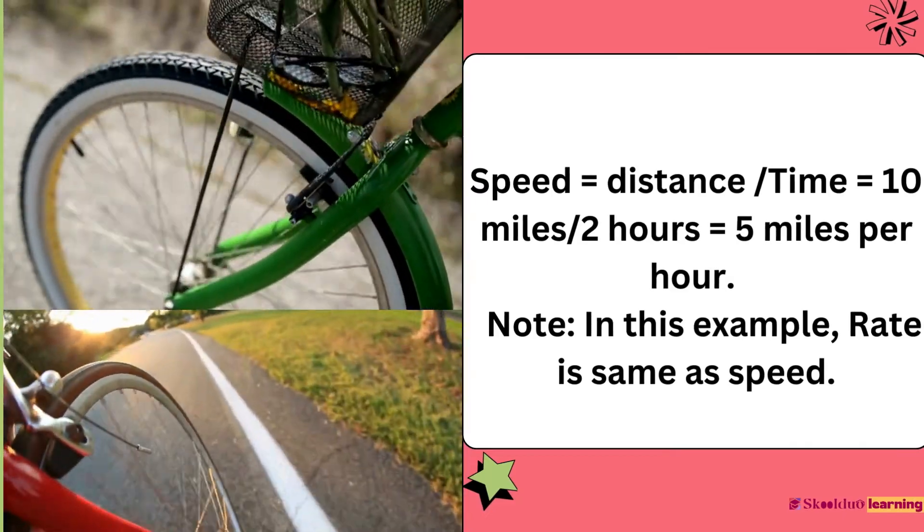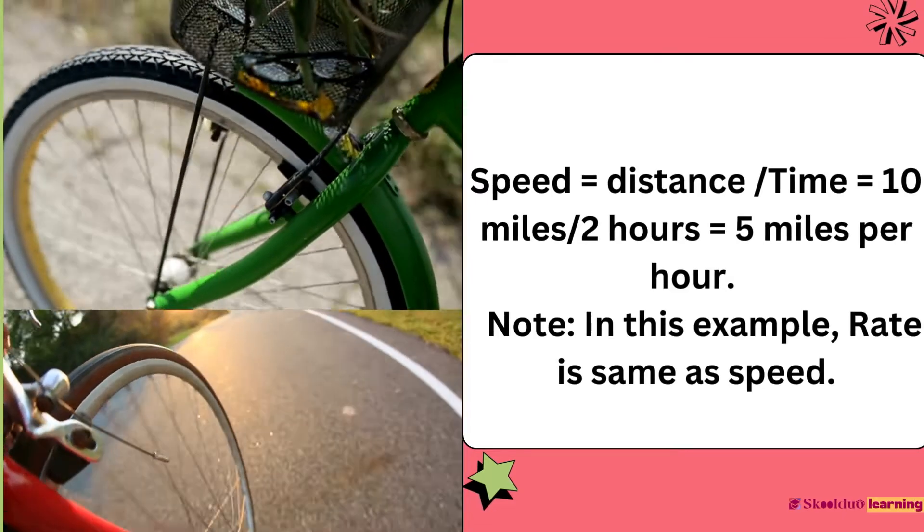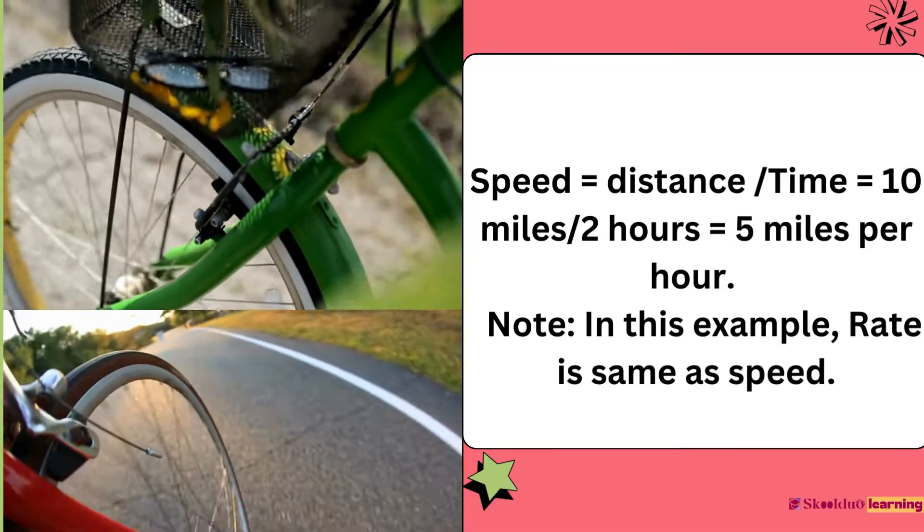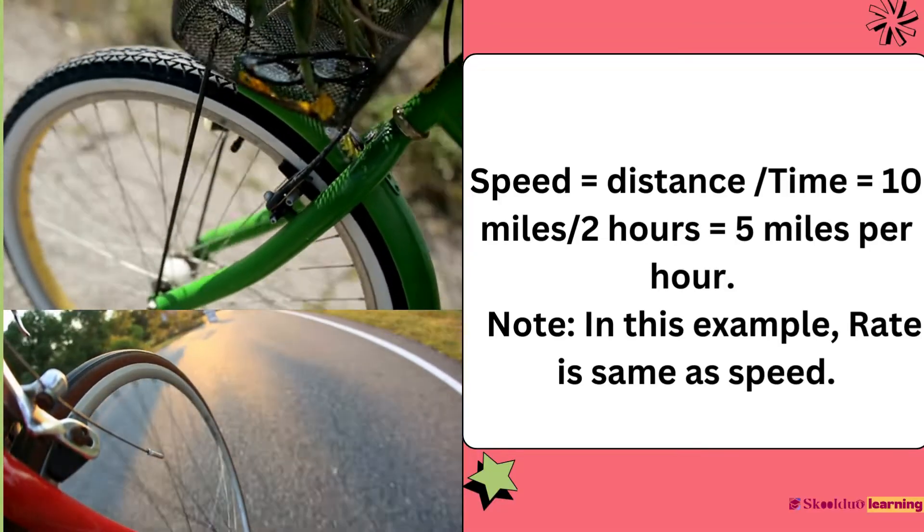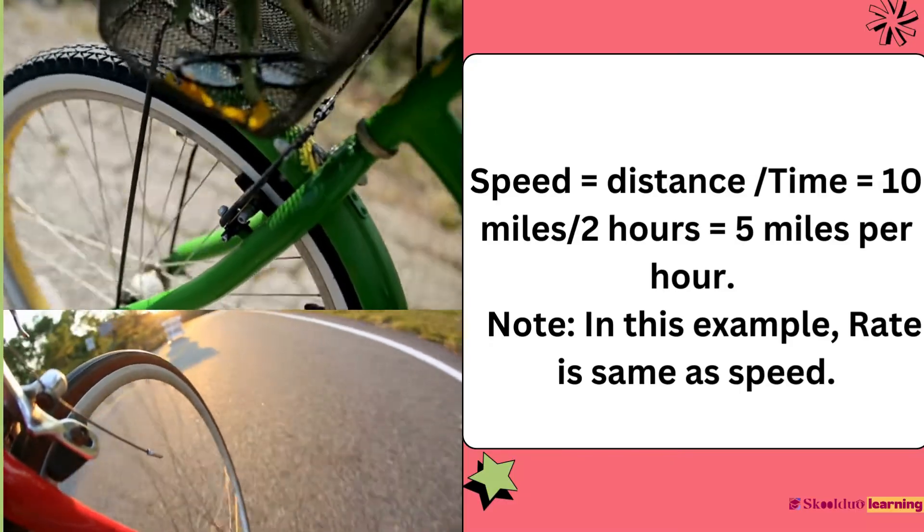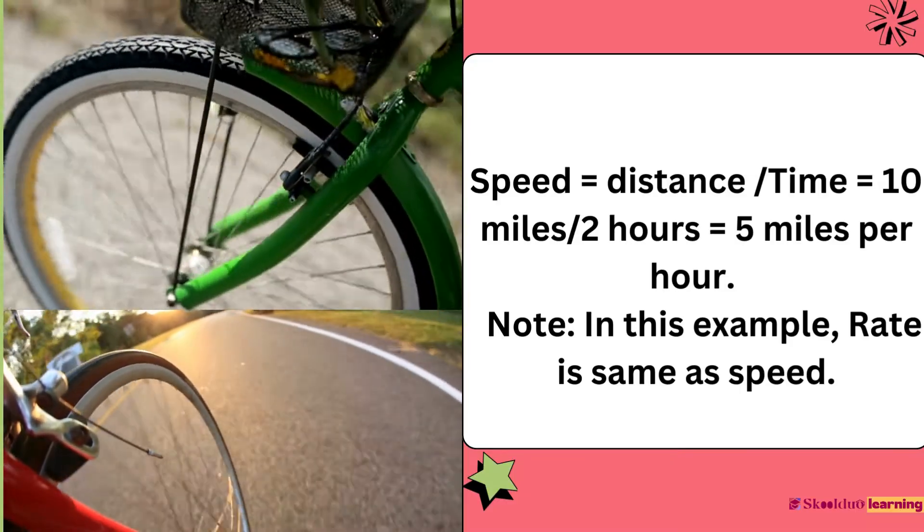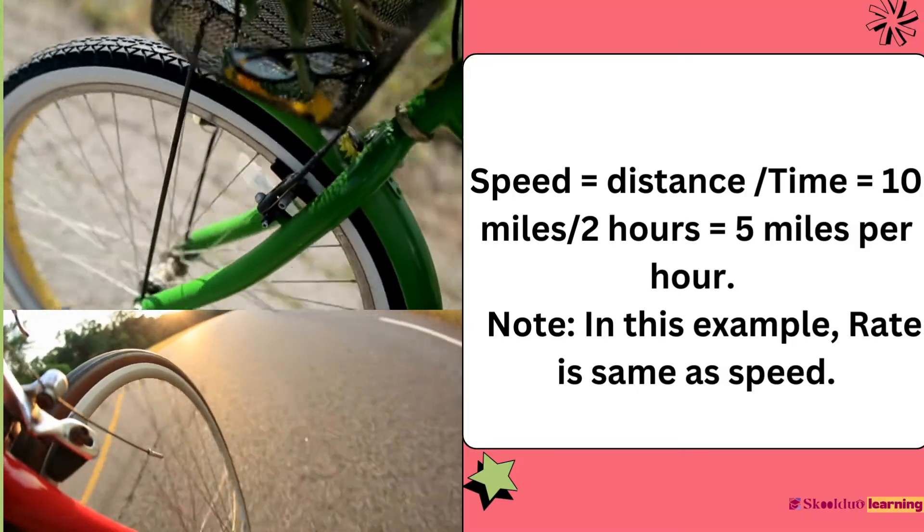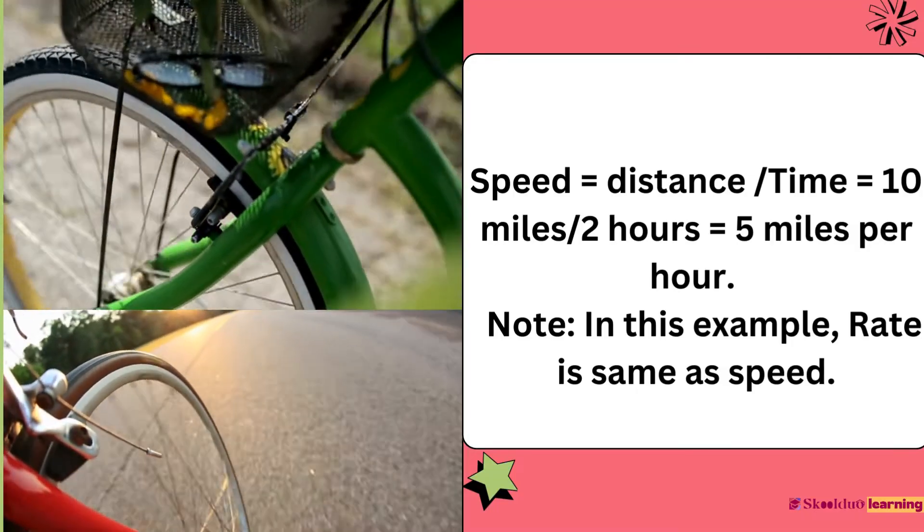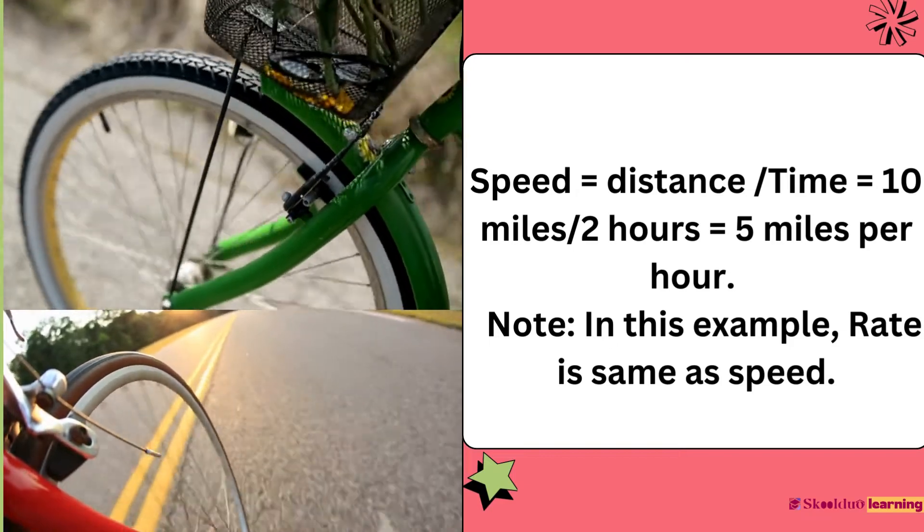For instance, you are riding a bike. Your rate of speed is how fast you are moving. If you ride 10 miles in 2 hours, your rate, which is your speed in this case, is distance divided by time, which is 10 miles divided by 2 hours, which is 5 miles per hour. Here, the rate tells us that you're moving at 5 miles per hour.